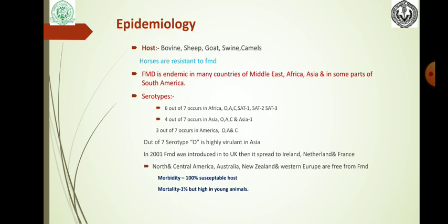Epidemiology — Host species include bovine, sheep, goat, swine, and camels. Horses are resistant to FMD. FMD is endemic in many countries of the Middle East, Asia, Africa, and some parts of South America. 6 out of 7 serotypes occur in Africa (O, A, C, SAT1, SAT2, SAT3), 4 out of 7 in Asia (O, A, C, Asia 1), and 3 out of 7 in America (O, A, and C).